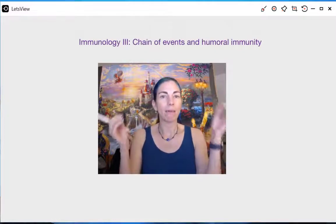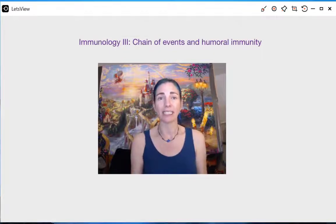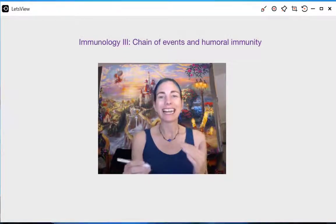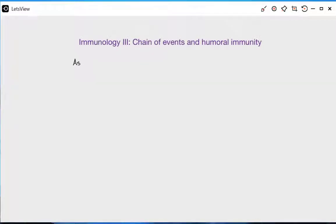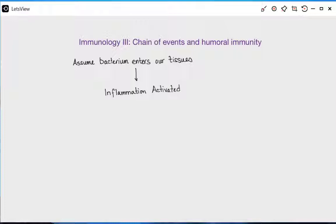But let's say a bacterium gets past the surface defenses and into our deeper tissues. Then the next response is the innate immune response. If bacteria invade our tissues, mast cells — or basophils if it's in the blood — are alerted to their presence and degranulate, starting the inflammatory process. This is part of our innate immune response.